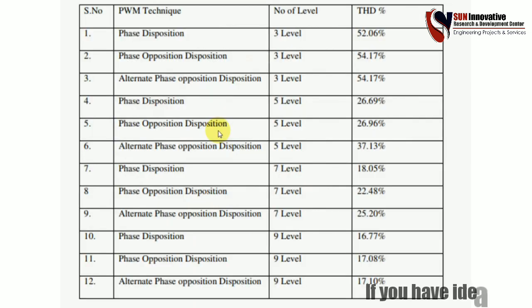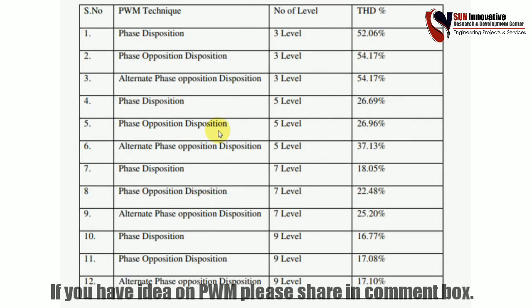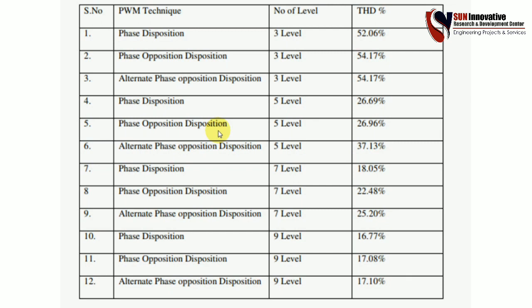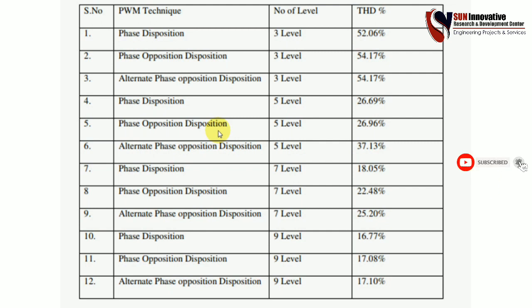A comparison table has been prepared showing THD levels obtained when each gate pulse technique is applied to multilevel inverters from 3-level to 9-level. These results show the change observed across different PWM techniques. Now we move to MATLAB simulation software to demonstrate how these gate pulses are generated.